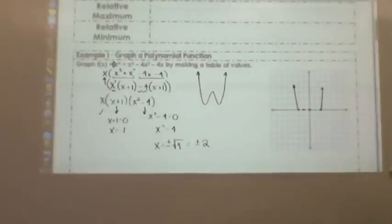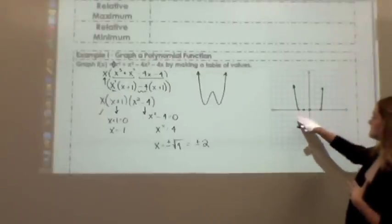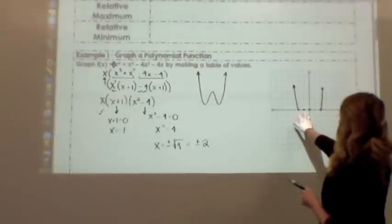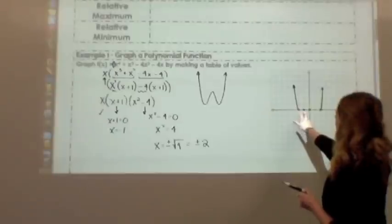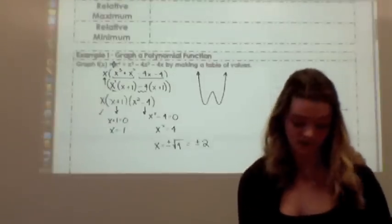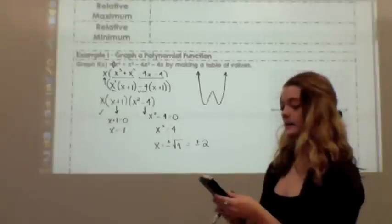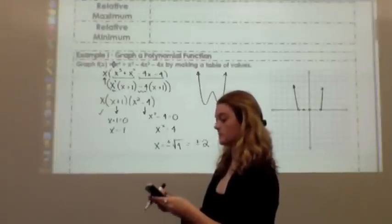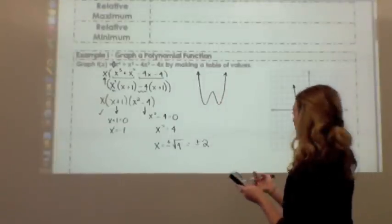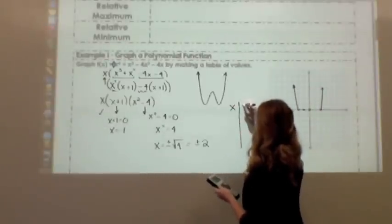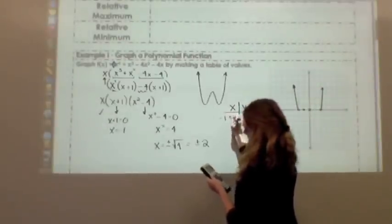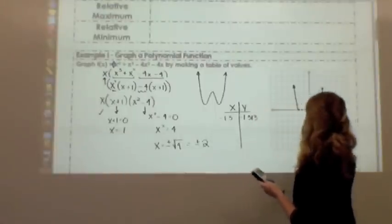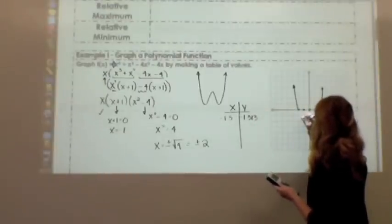But now I've got to figure out where is it going to end up between all these locations here. So let's plug in a value between negative 2 and negative 1. Actually, I'm just going to use a table on my calculator. And on my calculator, I'm going to make it go up by 0.5s. And so I find out at negative 1.5, I have a y value of negative 1.313. Notice, that's approximately right here.